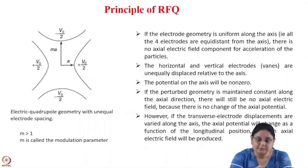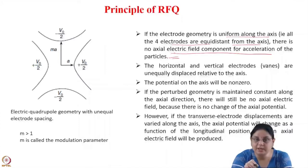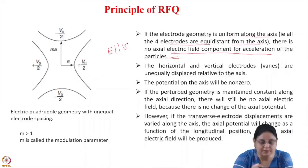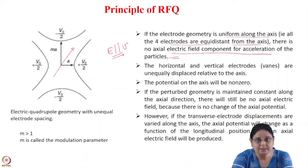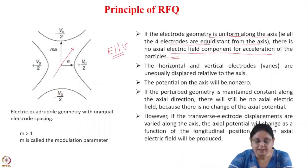For such a system, because the electrode geometry is uniform along the axis — that is, all four electrodes are equidistant from the axis — there is no axial electric field component for the acceleration of the particles. Remember from the first lecture: for acceleration using electric field, there must be a component of electric field in the direction of velocity of the charged particle, that is in the z direction. An electric quadrupole has fields only in the x and y directions. If the electrode geometry is uniform along the axis, then there is no Ez field.